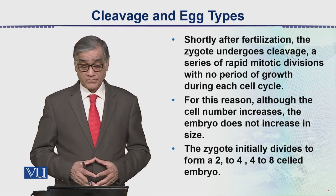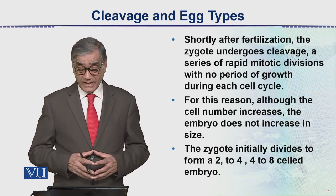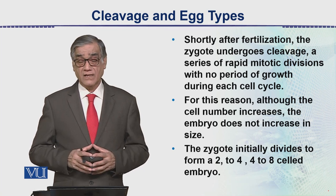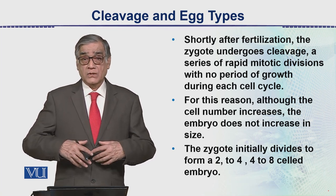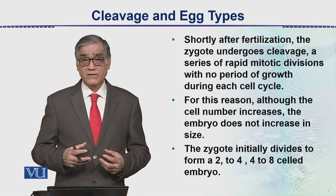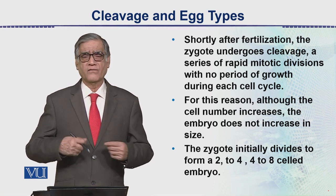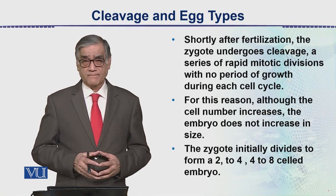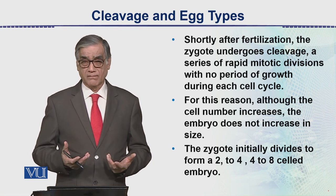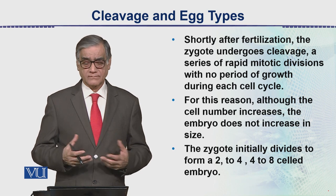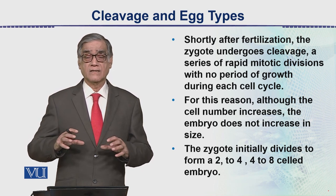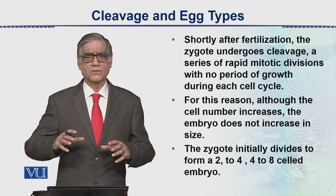Shortly after fertilization, the zygote undergoes cleavage — a series of rapid mitotic divisions with no period of growth during each cycle. The G phase is bypassed. Consequently, daughter cells are formed very quickly; there is very fast cell division. This is evident from organisms like a fish — for example, Colisa — where from egg to young one it takes only 22 to 24 hours.